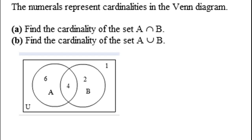We need to be familiar with Venn diagrams and how to analyze the cardinalities, or number of elements, in each region of a Venn diagram. In this diagram, the numerals represent the cardinalities, the number of elements in each region.